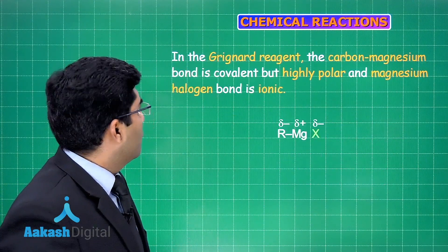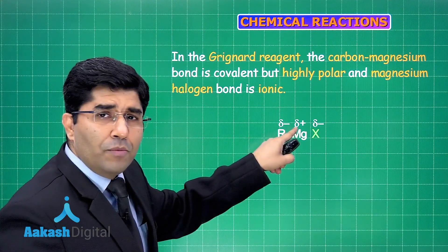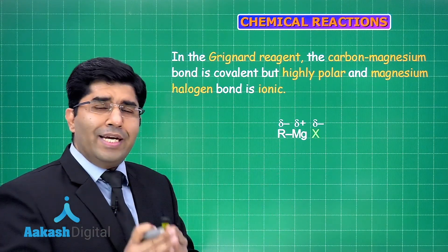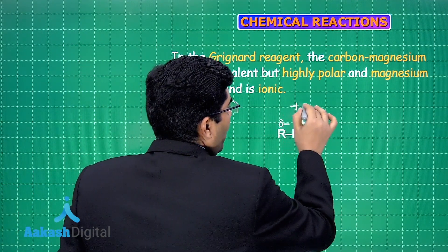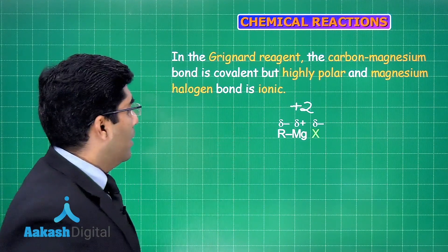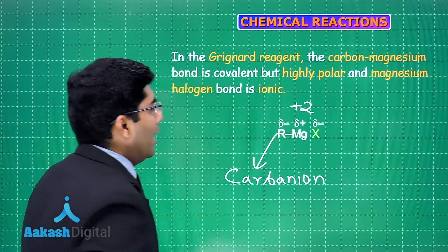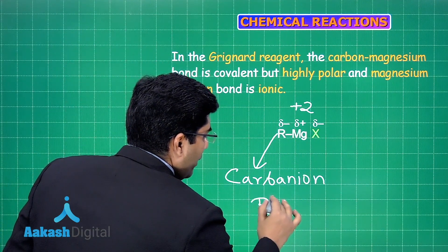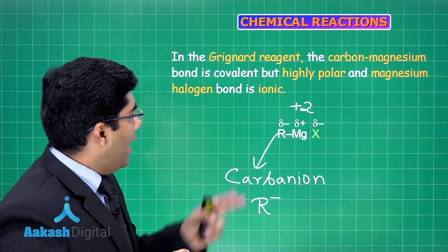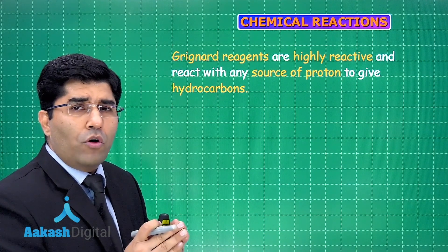Now let's talk about the nature of the bonds present in Grignard reagent. In Grignard reagent, the carbon-magnesium bond is covalent, and the magnesium-halogen bond is ionic. The oxidation state of magnesium here is +2, which means that R is a carbanion — it carries a negative charge. So R can be CH₃⁻, C₂H₅⁻, C₆H₅⁻, and the halide ion is also present.